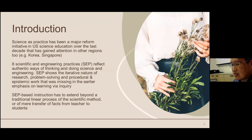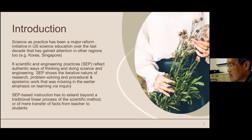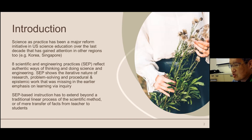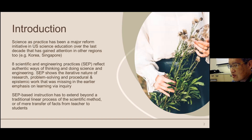In the US, there are eight SEP, or Scientific and Engineering Practices, which reflect authentic ways of thinking and doing science and engineering. SEP represents an advance because it helps students understand the nature of research, problem solving, thinking about procedures, and epistemic work that was perhaps missing in earlier versions of learning science by inquiry. SEP is iterative and extends beyond a linear process of the scientific method.